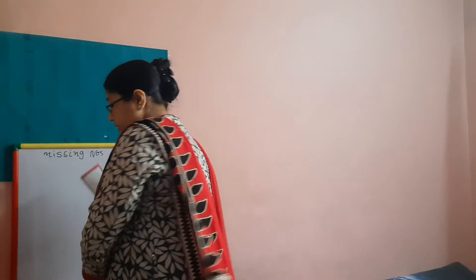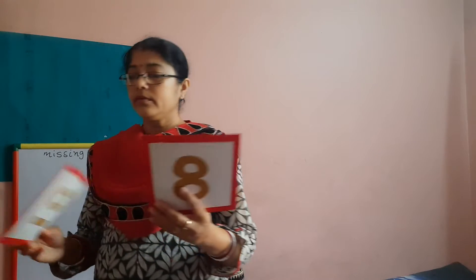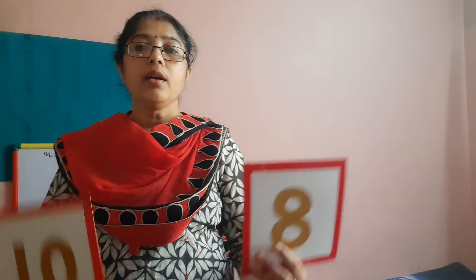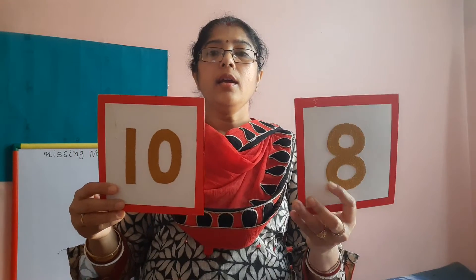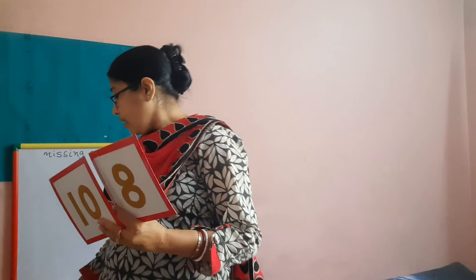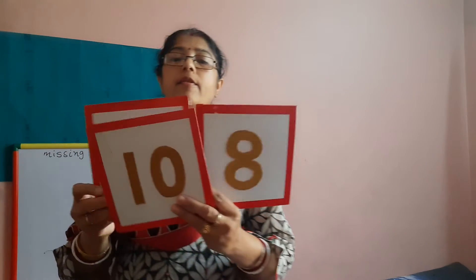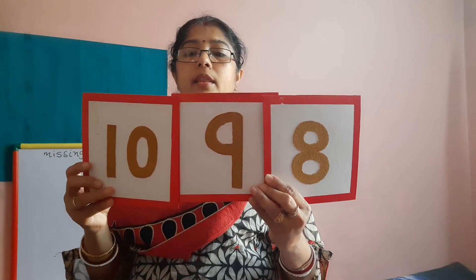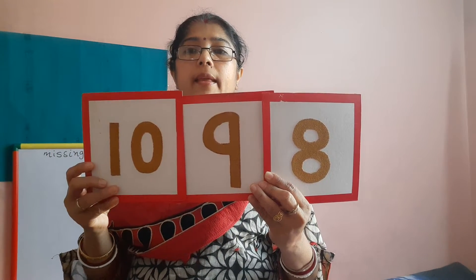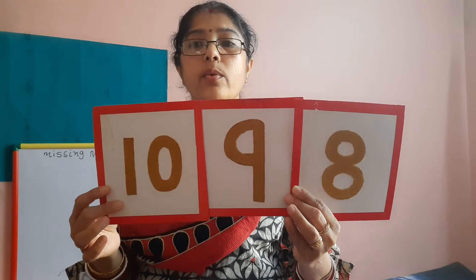And again, number 8 and number 10. Again, bich wala missing hai? Again, bich wala missing between 8 and 10. And that number is number 9. 8, 9 and 10. Now the sequence is complete.